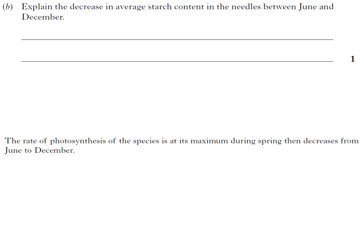So starch, you should know, is the storage carbohydrate made during photosynthesis, because you make glucose and then you store it as starch. And when you're doing less photosynthesis, you have to start using up your starch. So as photosynthesis goes down, you need to start eating away at your storage. That's it.